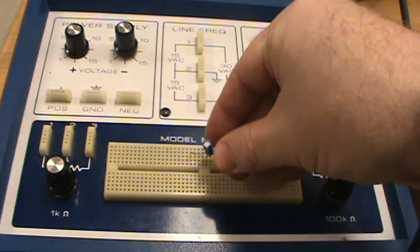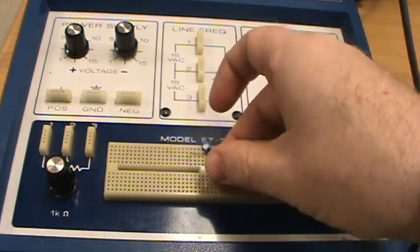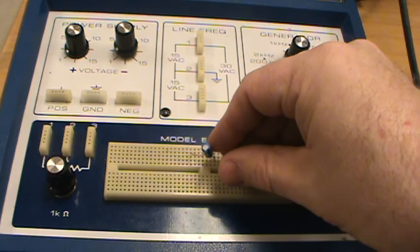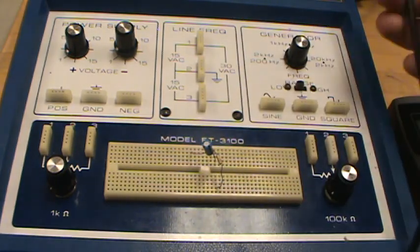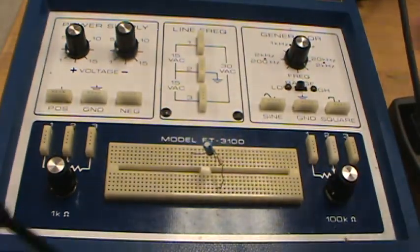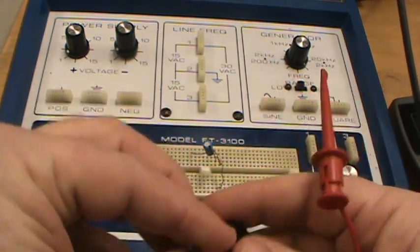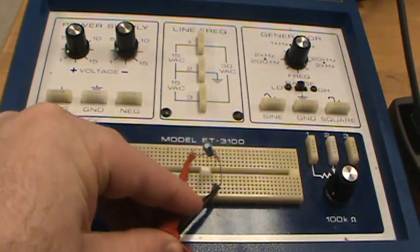Now we're going to put our common ground on the resistor side instead. Make sure to locate the negative terminals or the black terminals for the function generator. Here that is. I'm going to put it on the resistor side since we're going to measure across the resistor.